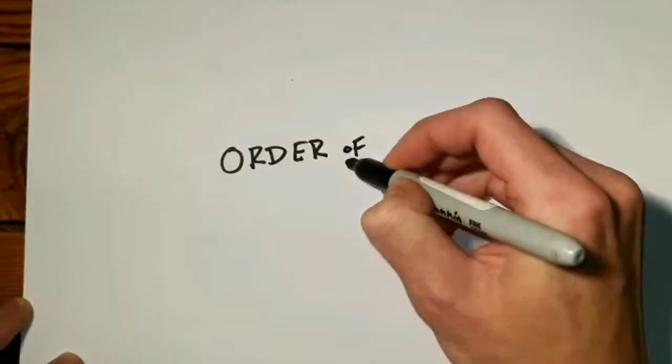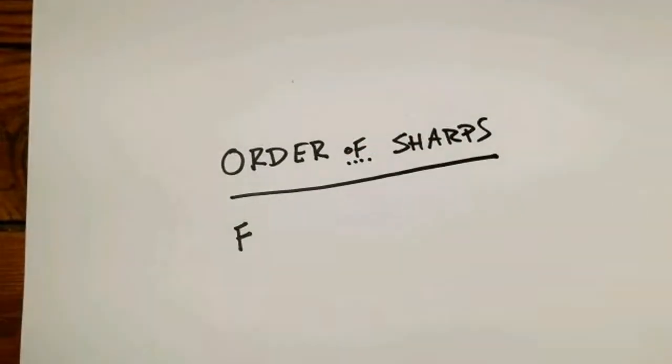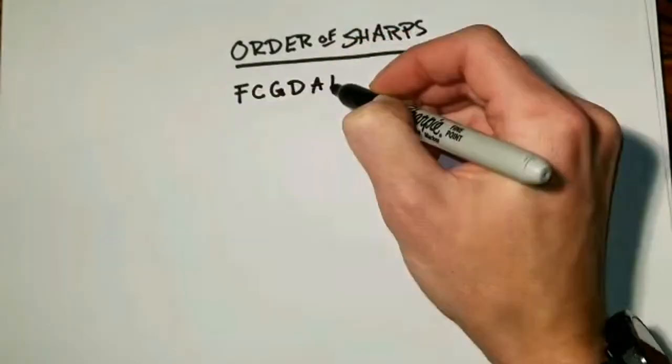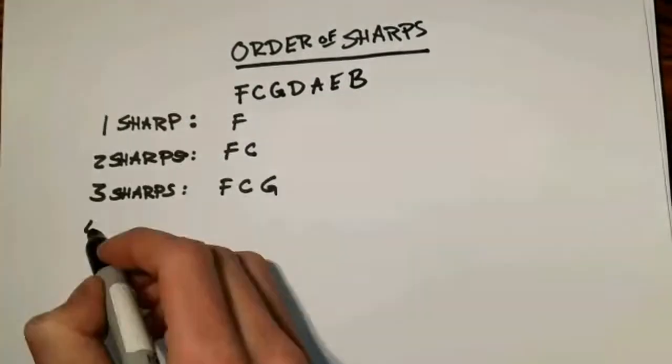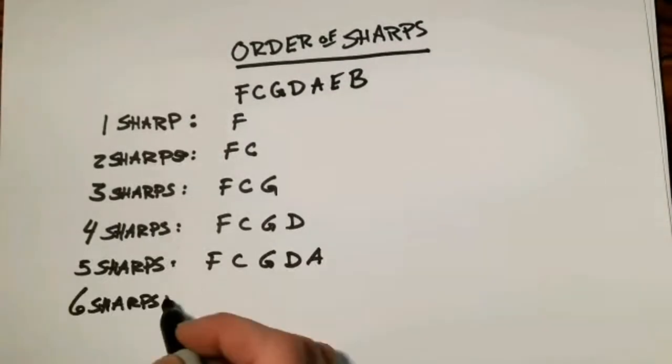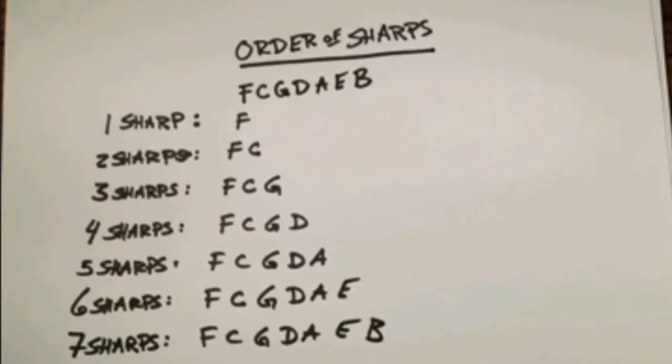Now the other rule, the order of sharps, is the exact same thing, but the sharps appear in a different order, F-C-G-D-A-E-B. A scale or key signature with one sharp would always have F-sharp in it, and that's it. A scale or key signature with two sharps would reuse or recycle the F-sharp and add the second sharp, which is C. So it would be F-sharp and C-sharp, and on and on for the rest of the key signatures.